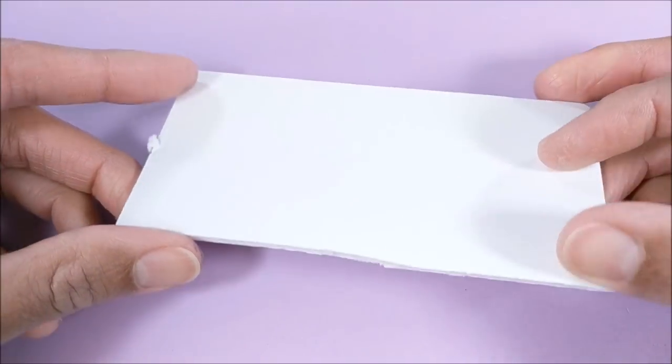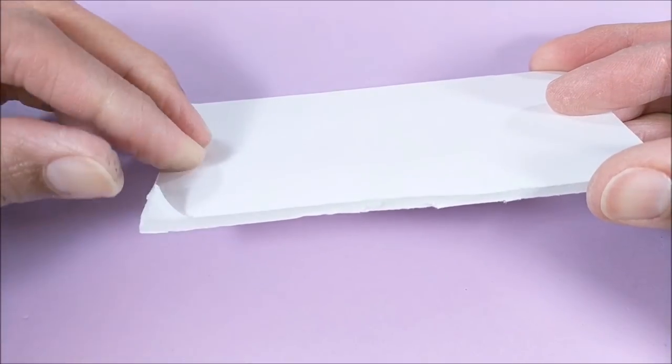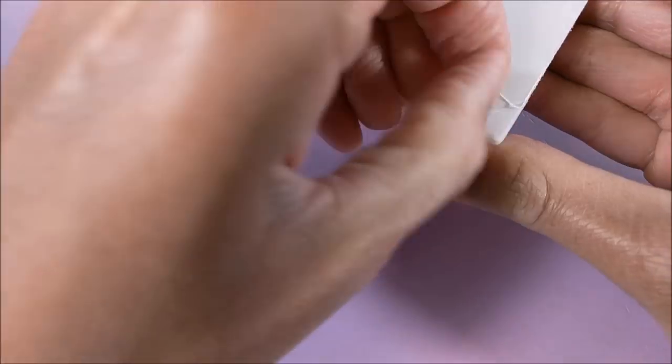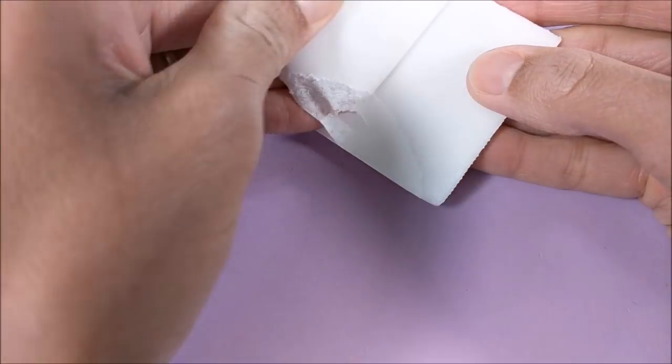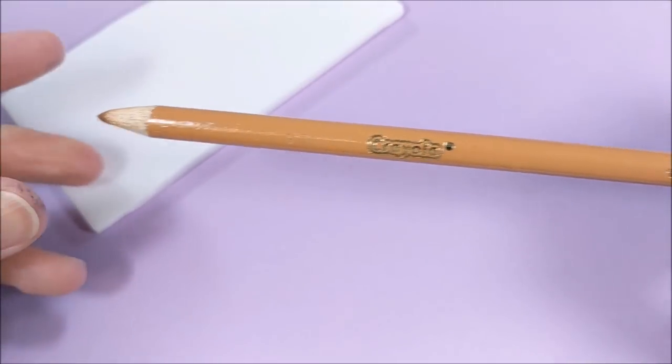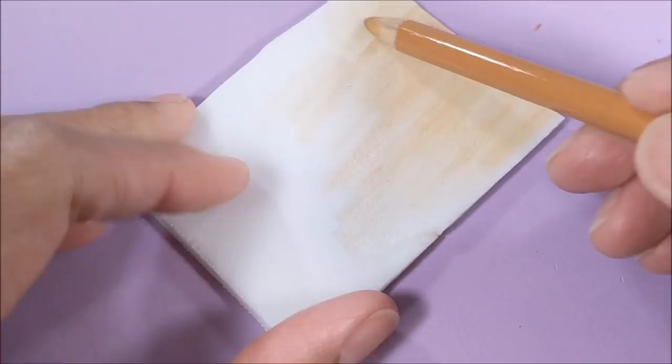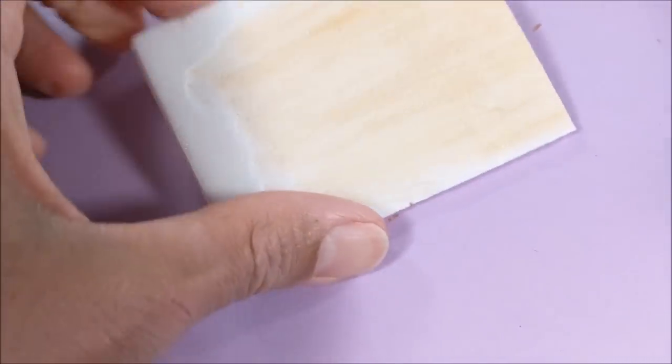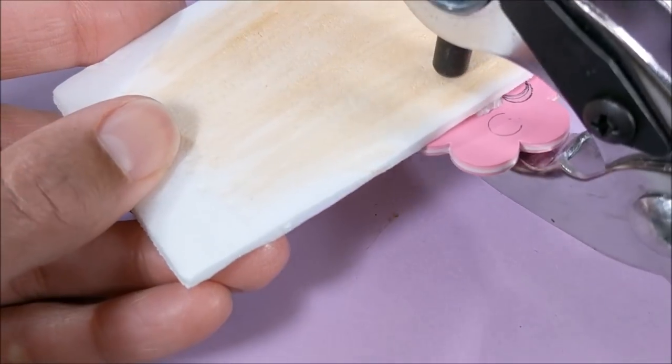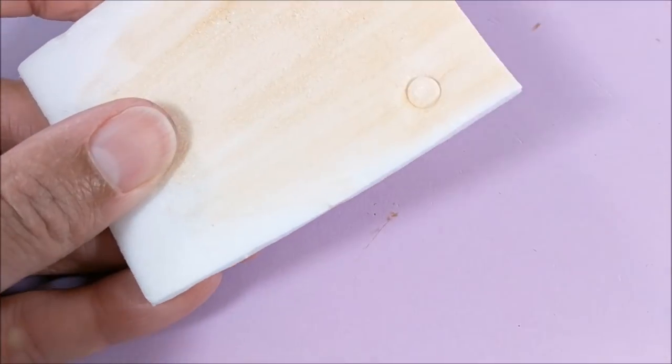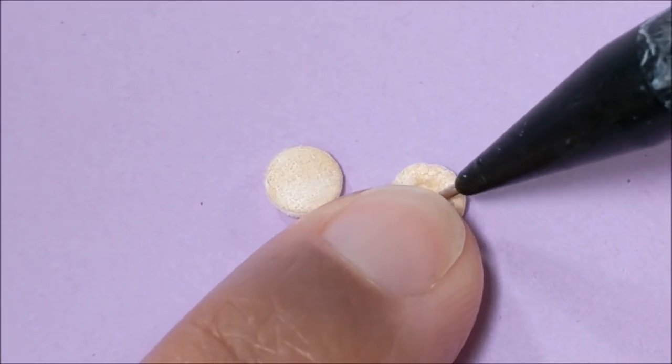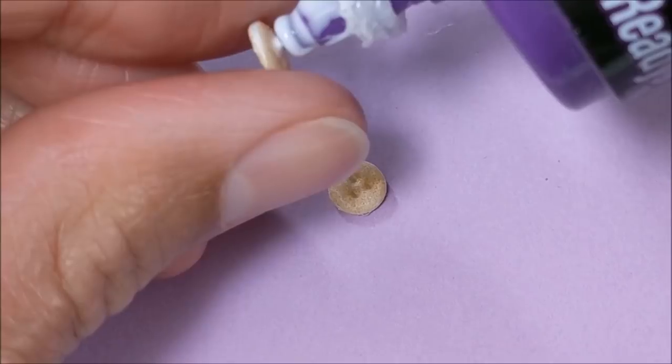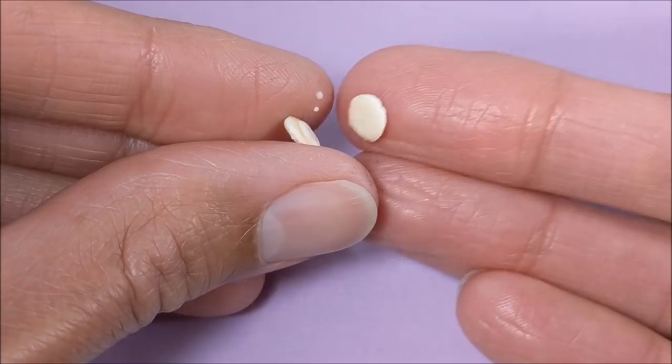For the other cookies, peanut butter and chocolate chip, I remove the paper from both sides of foam board. I use a tan colored pencil to give it some color and punch out, then use something sharp for detail, first making the peanut butter.